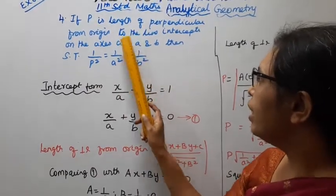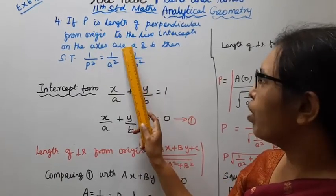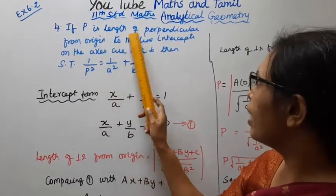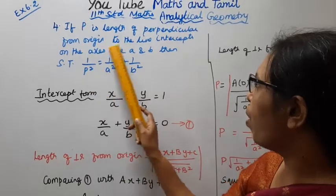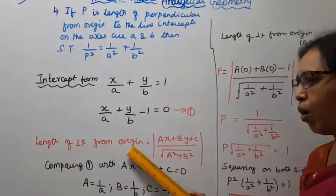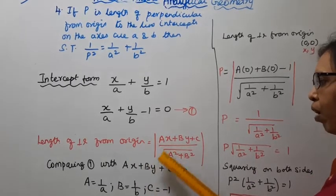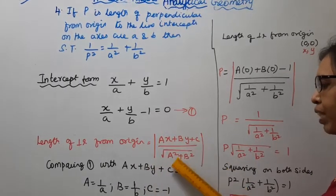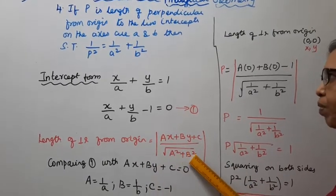Now we will use two formulas. P is the length of perpendicular from origin to the line. The formula is: mod of AX plus BY plus C, divided by root of A square plus B square.